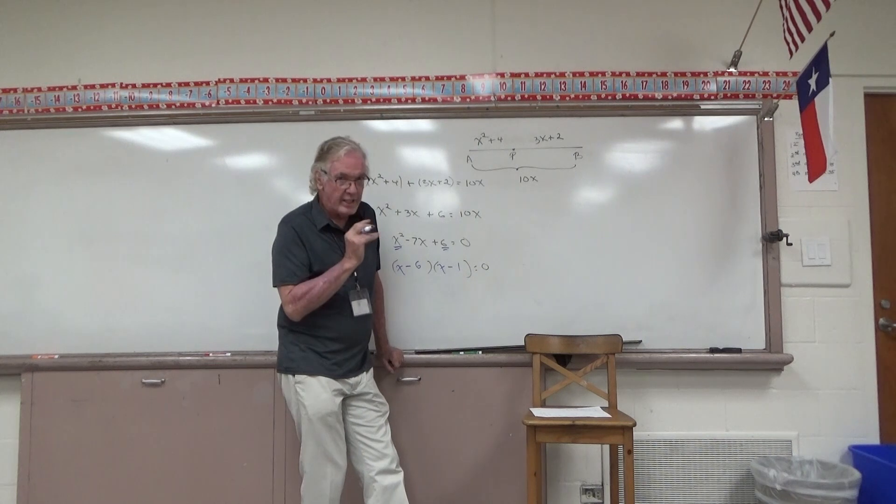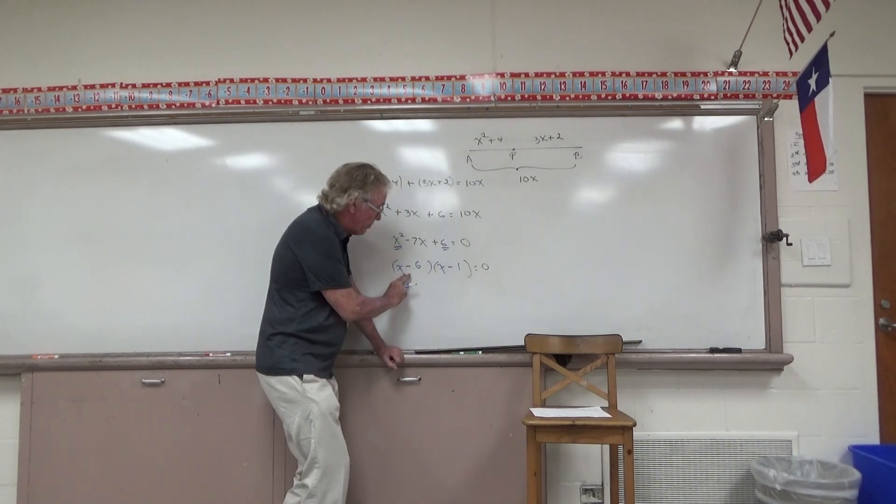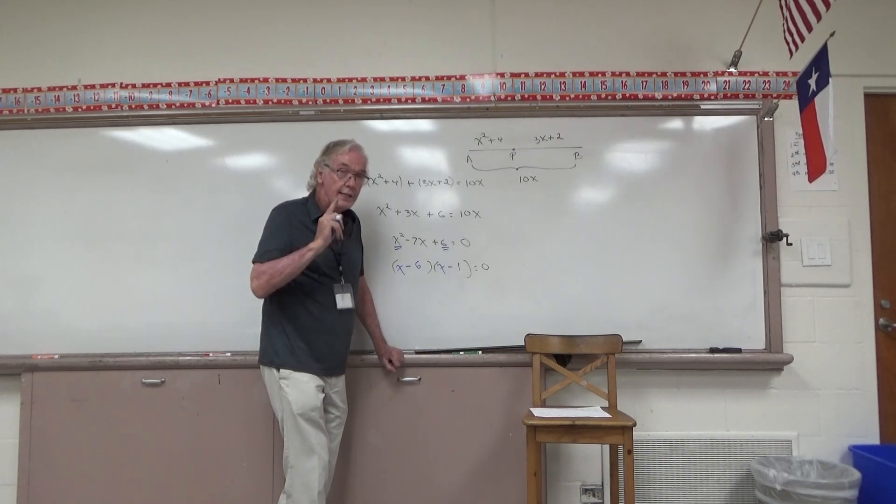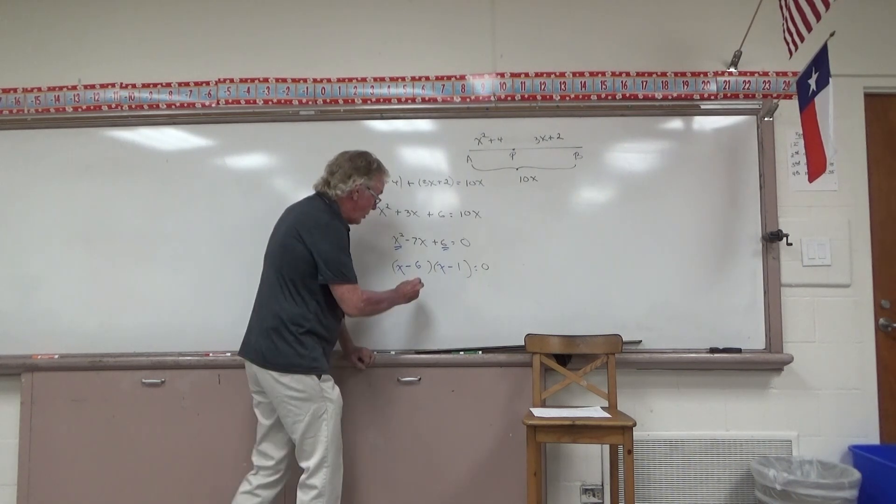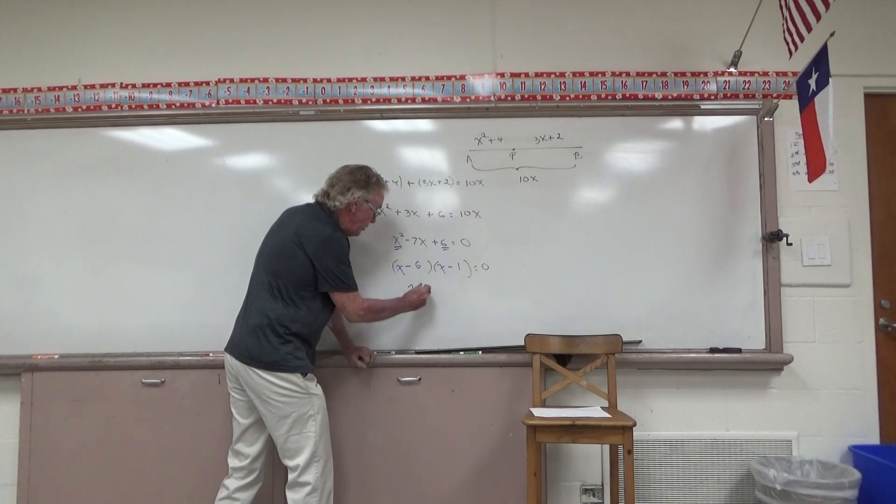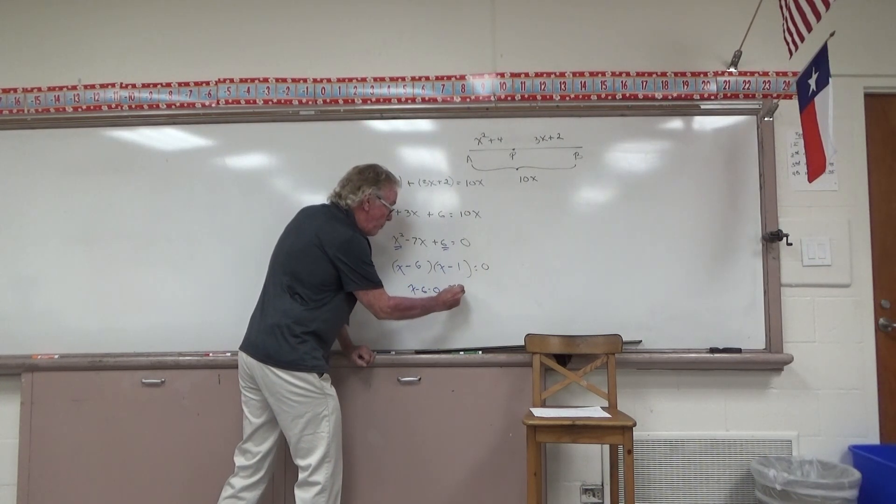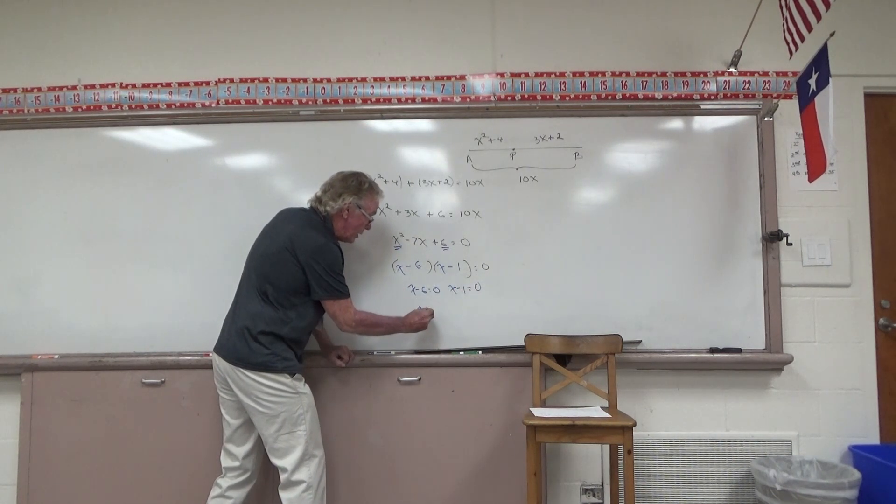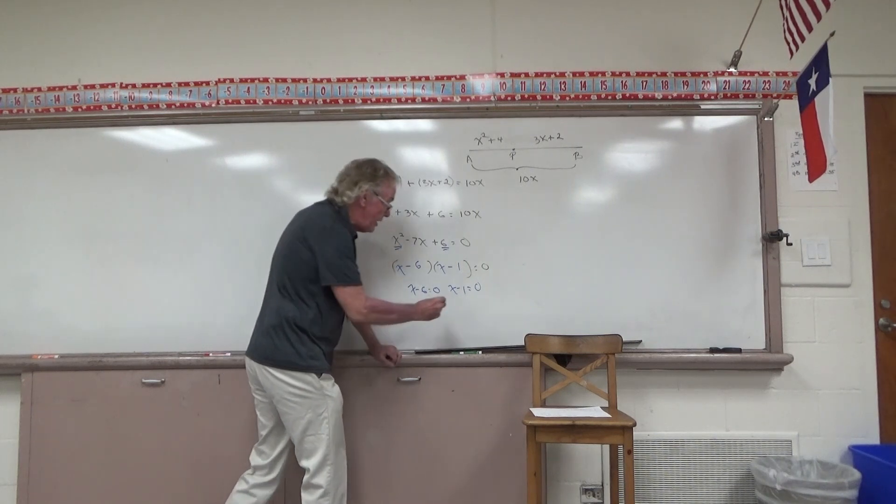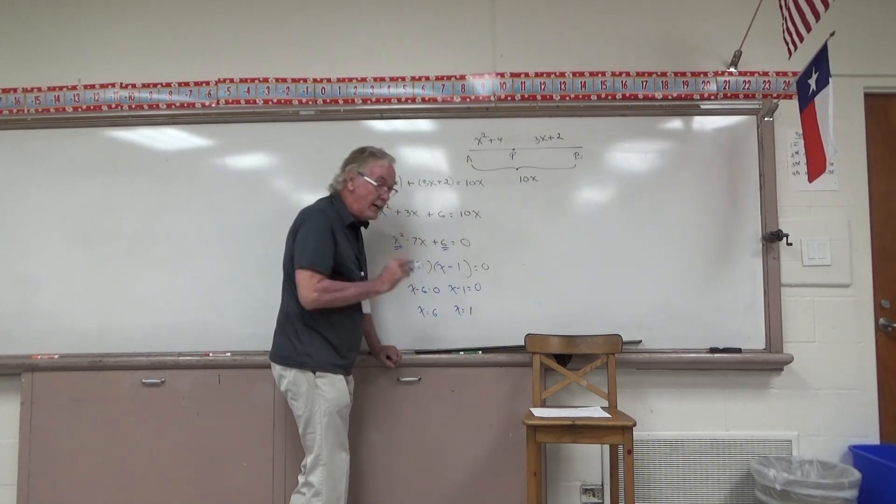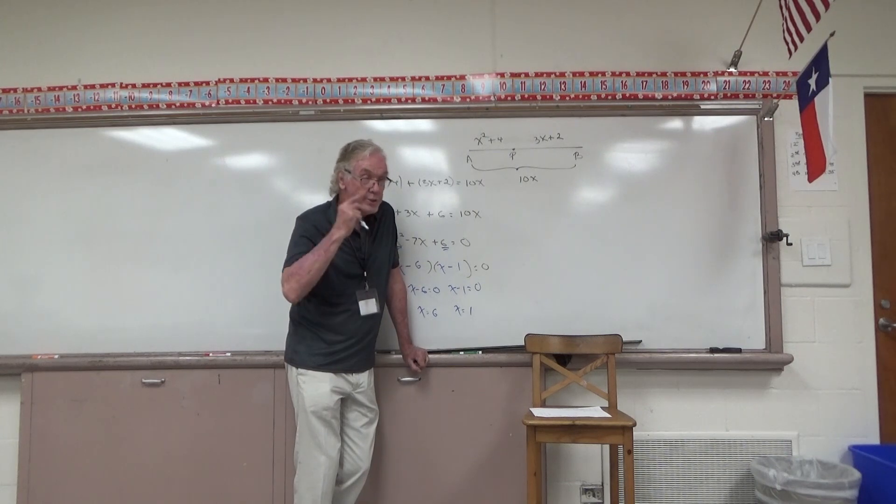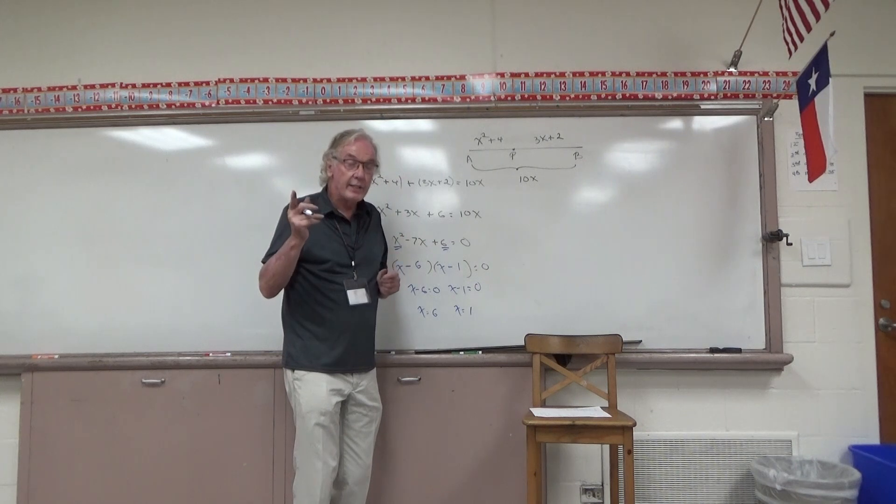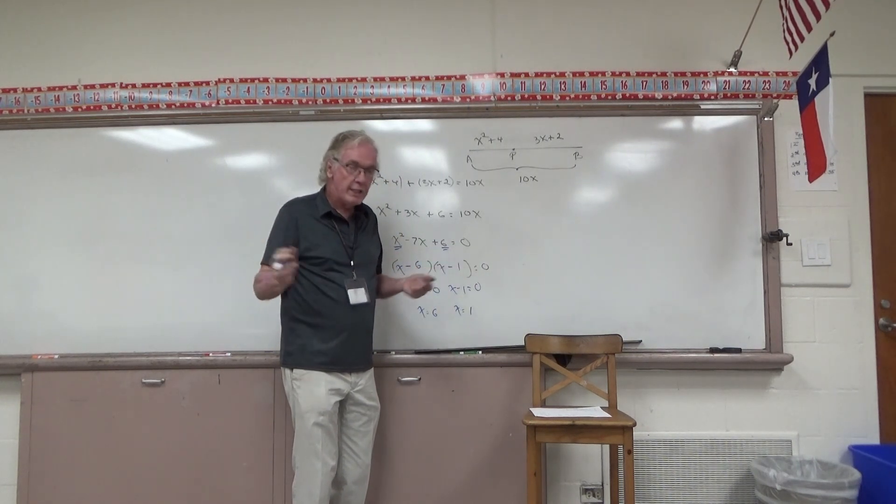What should we do now? Here's an important idea. If the product of two factors is equal to 0, then one of those factors must be 0. Let's set the two factors equal to 0 and see what comes. So X minus 6 could be equal to 0, or X minus 1 could be equal to 0. Solving those little wimpy equations, X is either equal to 6 or X is equal to 1. Every quadratic equation pretty much has two roots. We have two roots. Let's investigate them both, see if they're both valid. Sometimes you find what's called an erroneous root that is not valid.